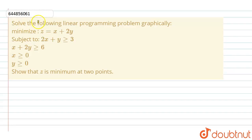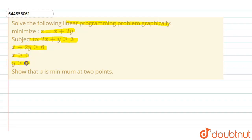The question is: solve the programming problem — minimize Z equal to x plus 2y, subject to 2x plus y greater or equal to 6, x greater or equal to 0. Show that Z is minimum at a point.